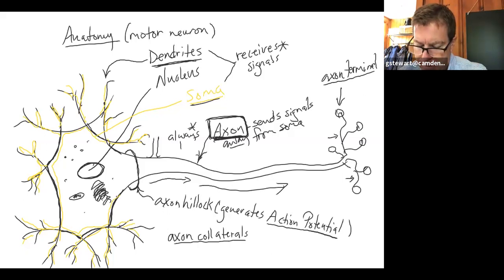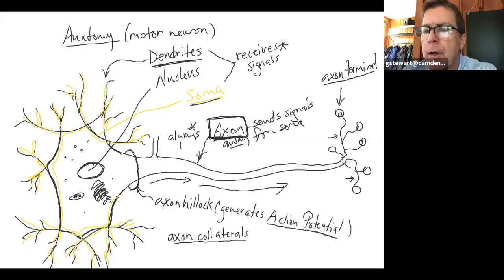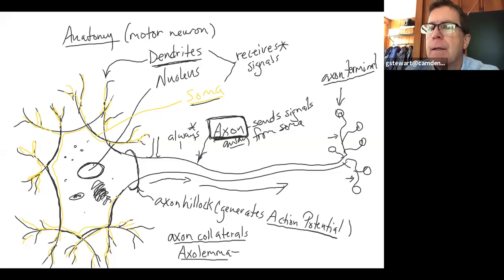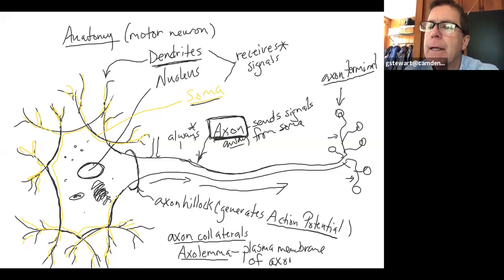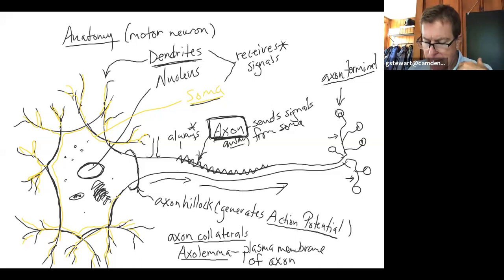Finally, the axolemma is just the plasma membrane of the axon. The electrical impulse actually travels down the axolemma. That's the basic anatomy of a neuron. Now I'm going to talk about the myelin sheath.